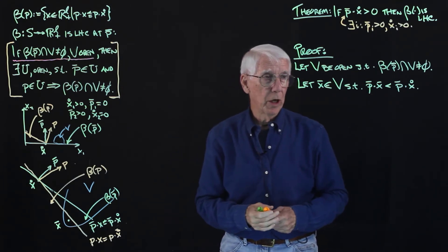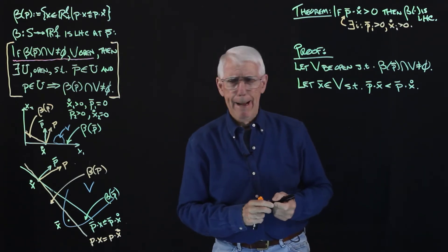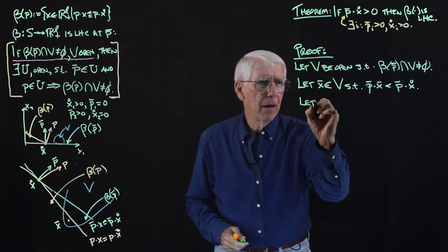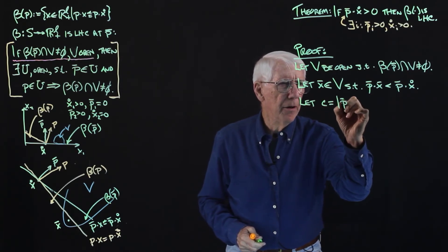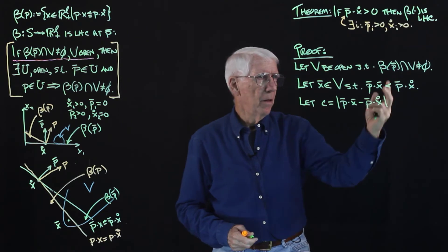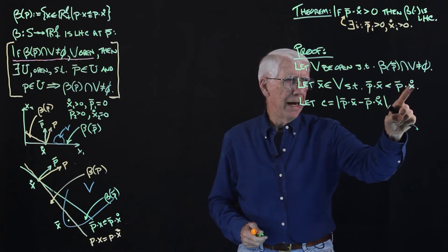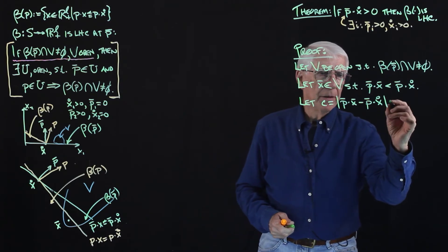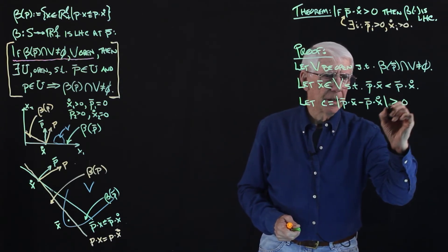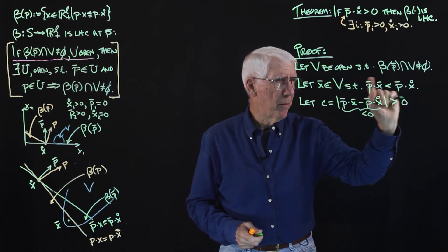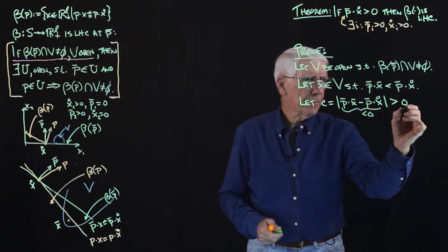Let's define the number C, which is the difference between the value of X circle and the value of X bar at the benchmark price list P bar — that is, P bar dot X circle minus P bar dot X bar. Notice that C is strictly positive because P bar dot X bar minus P bar dot X circle is strictly negative.